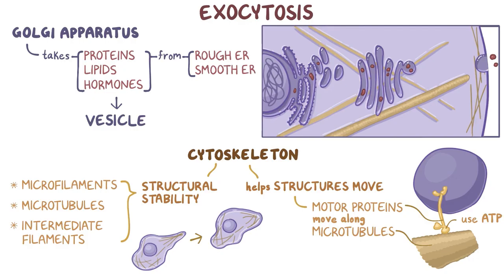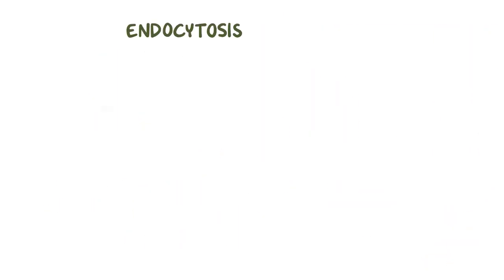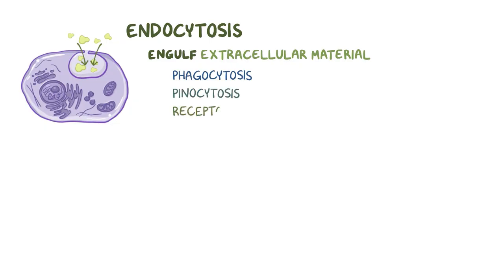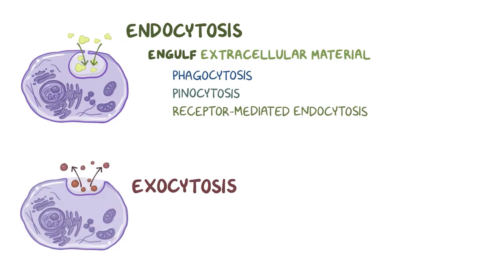Alright, as a quick recap. Endocytosis refers to the process in which cells engulf extracellular material, and there are different forms of endocytosis like phagocytosis, pinocytosis, and receptor-mediated endocytosis. Exocytosis refers to the process in which cells expel material into the extracellular space. Both endocytosis and exocytosis require ATP in order to happen.